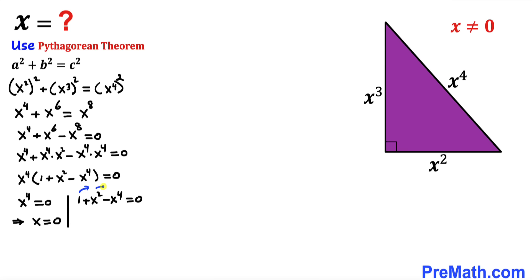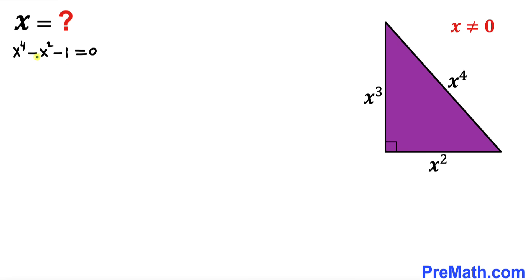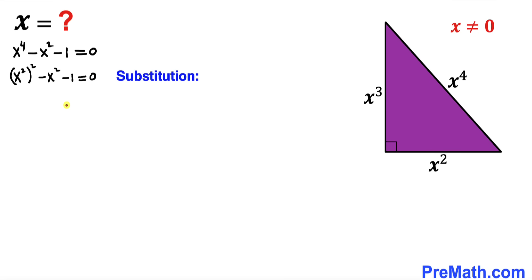Moving all terms to the right-hand side gives us x⁴ − x² − 1 = 0. Now this x⁴ can be written as (x²)², so the equation becomes (x²)² − x² − 1 = 0. Let's make a substitution: let u = x², to make our work easier.